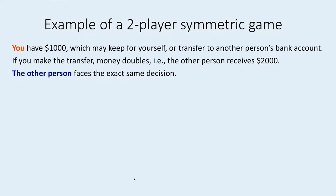You probably know what this means, but just in case let's look at a quick example. Imagine you have one thousand dollars and you may keep them for yourself, or you may wish to transfer them to another person's bank account. If you make the transfer, money doubles — the other person receives two thousand dollars. The other person is in exactly the same situation as you.